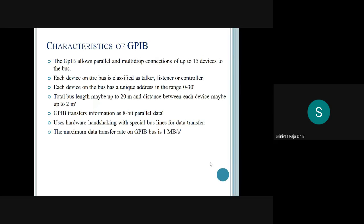The characteristics of GPIB: it allows parallel and multi-drop connections with up to 15 devices. Each device on the bus is classified into three types — talker, listener, and controller. Talker means you are sending data to the device; listener means you are receiving data; and controller means you are sending commands to the device. Each device will have a unique address.